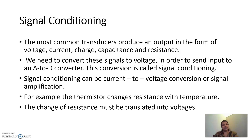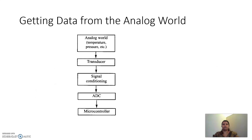Signal conditioning can be current-to-voltage conversion or signal amplification. One example is the thermistor, which changes resistance with temperature. The change of resistance must be translated into voltage. This figure shows the flowchart of getting data from the analog world to the microcontroller.